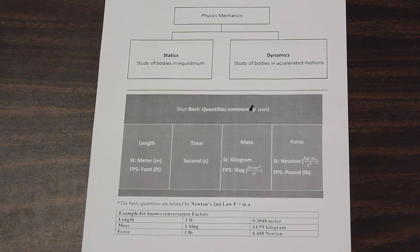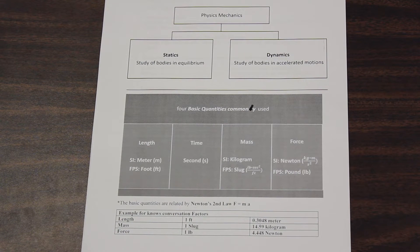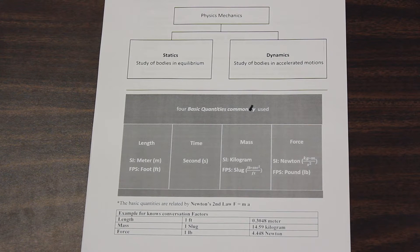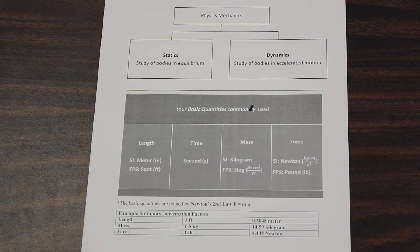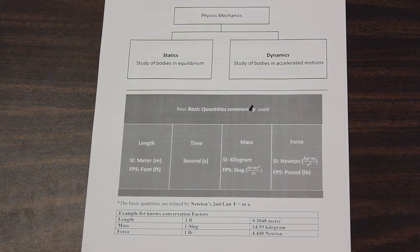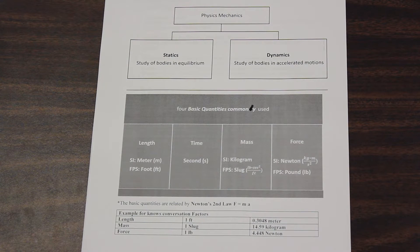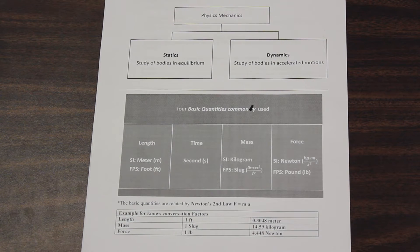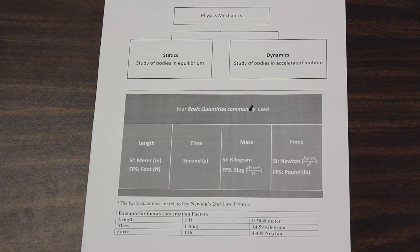For length units, in SI that's meters; in the FPS or American system, that's feet. Time units are the same in both systems — seconds, minutes, hours. For mass, we have kilograms in SI, and in FPS we have slugs, which is a pound-second-squared per feet unit — we don't really deal with that too much. For force in SI units, we have the Newton — kilogram meters per second squared — and in the American imperial system it's just pounds, or pounds of force.